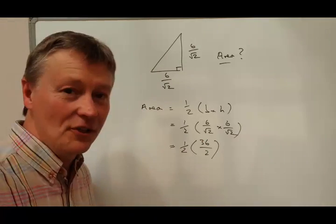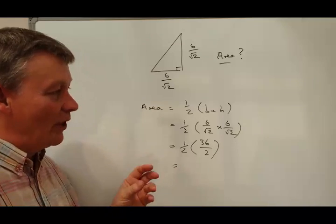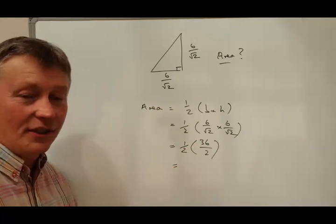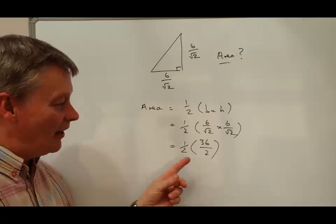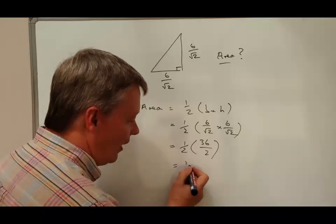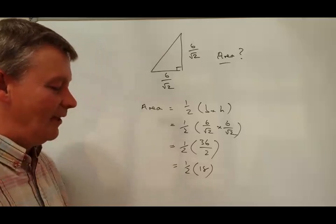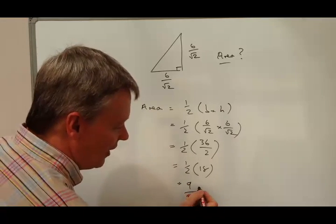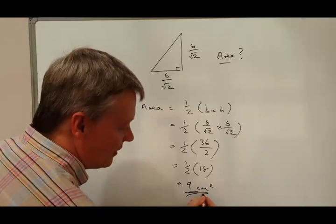Okay, so hopefully now it's not looking so bad, because the numbers themselves work out fairly neatly. 36 divided by 2 is 18, and 18 multiplied by a half, so it's a half times 18, and a half of 18 is 9. So in answer to this question, it's 9 centimeters squared.